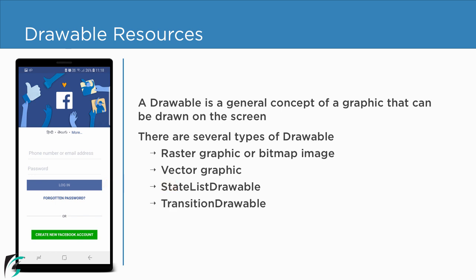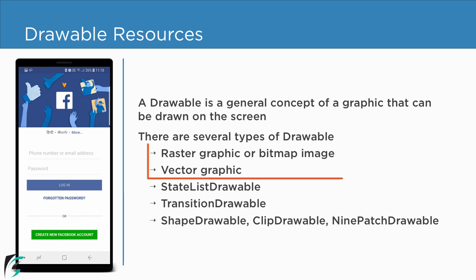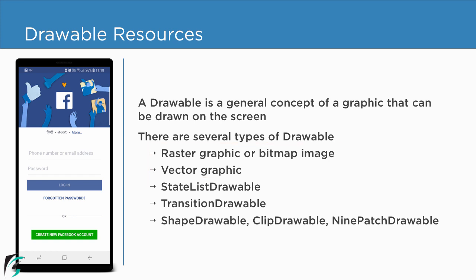Proceeding, we have transition drawable and there are a lot of drawable classes such as shape drawable, clip drawable, 9-patch drawable, and the list goes on. Now among all of these drawables, most of the time in your application you will use the raster graphic and the vector graphic. So let us get an overview of what they are.